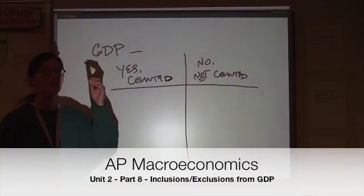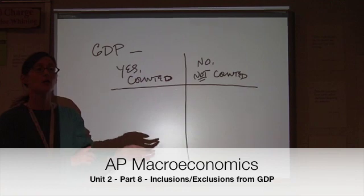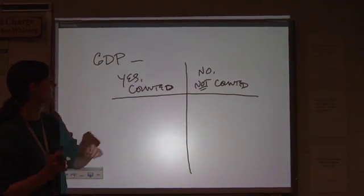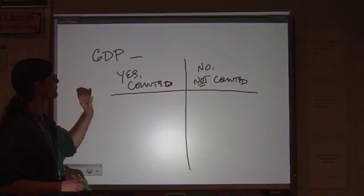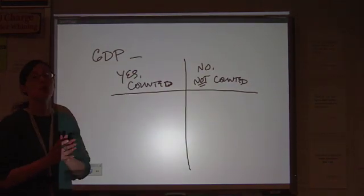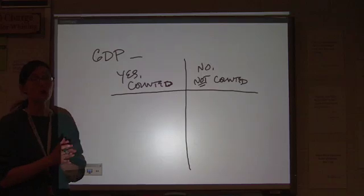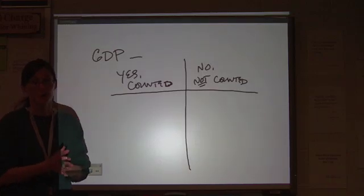One other thing that we need to do with GDP is look at categories of stuff that is counted and what is actually left out. The first thing that you need to know about GDP is that it is the sum total of a country's production.